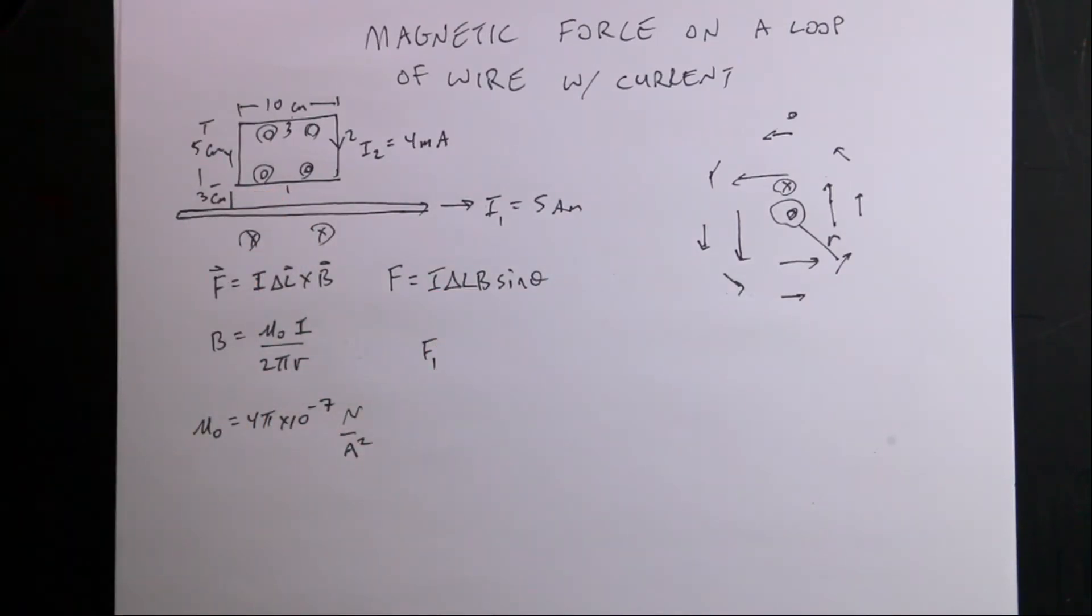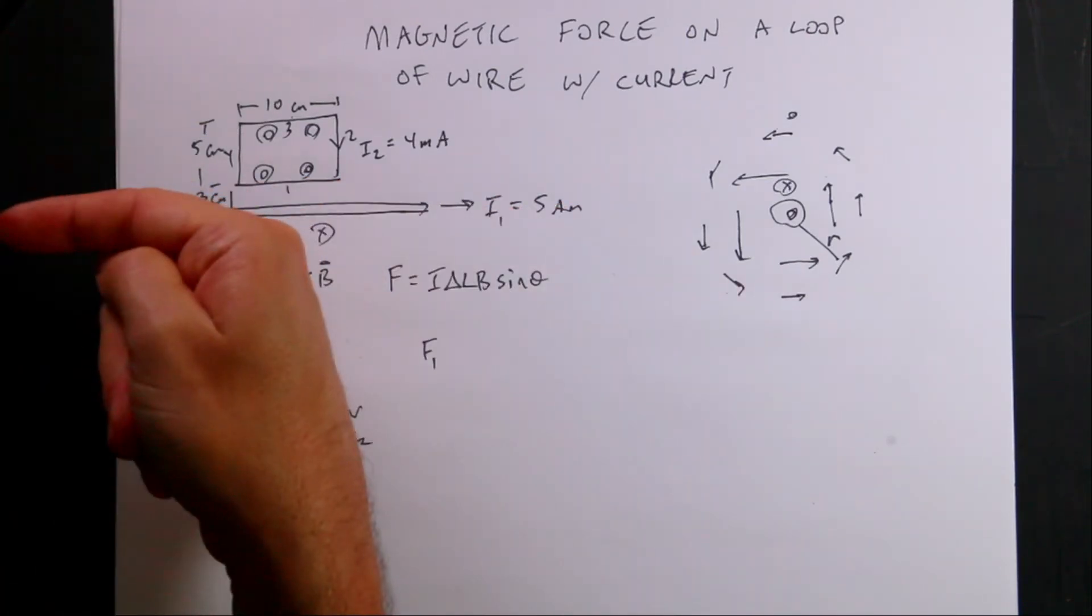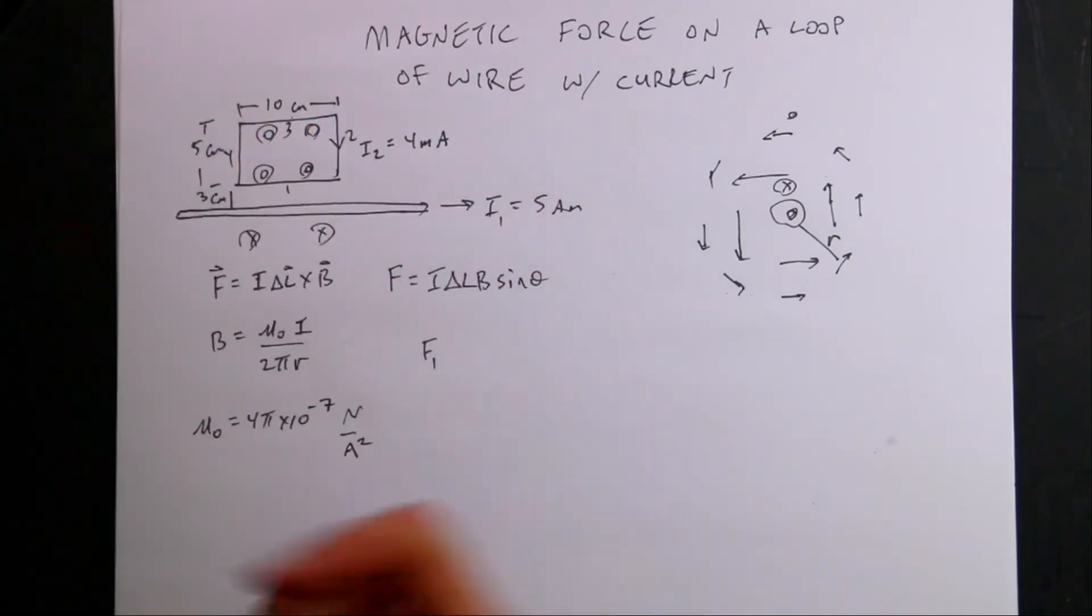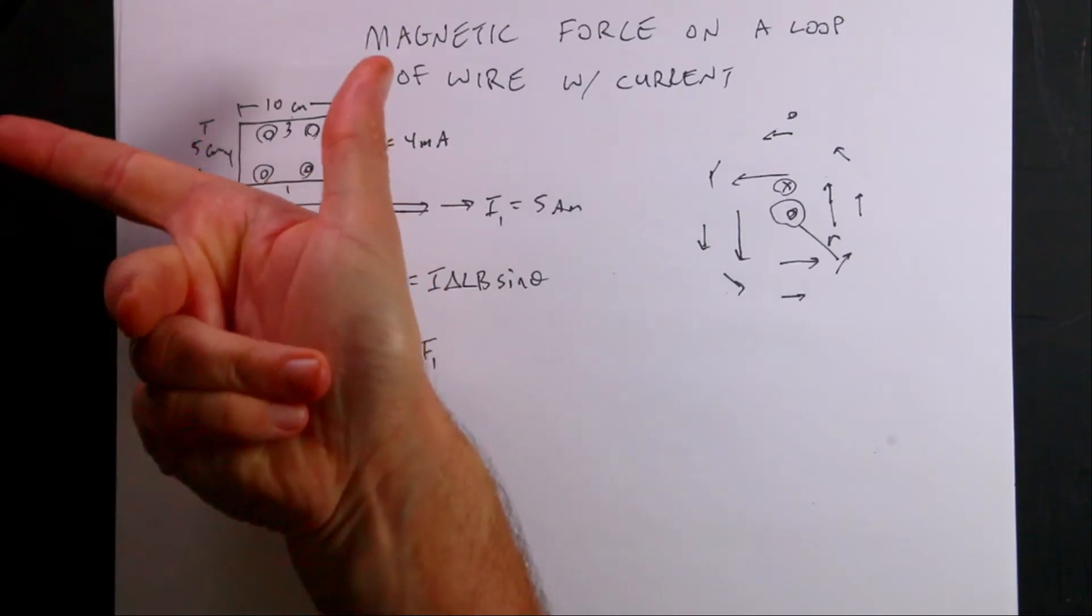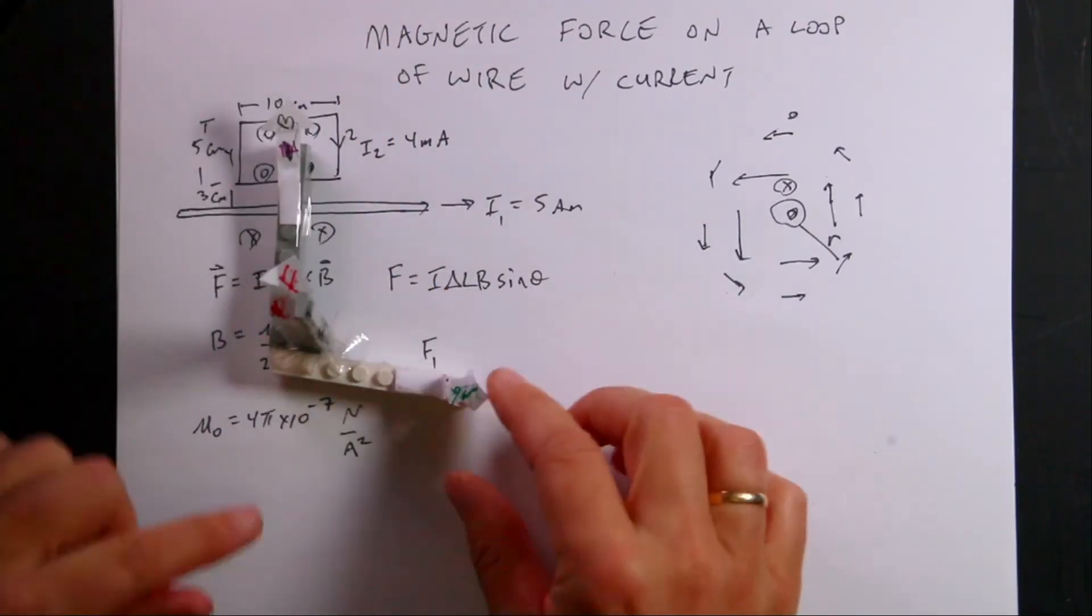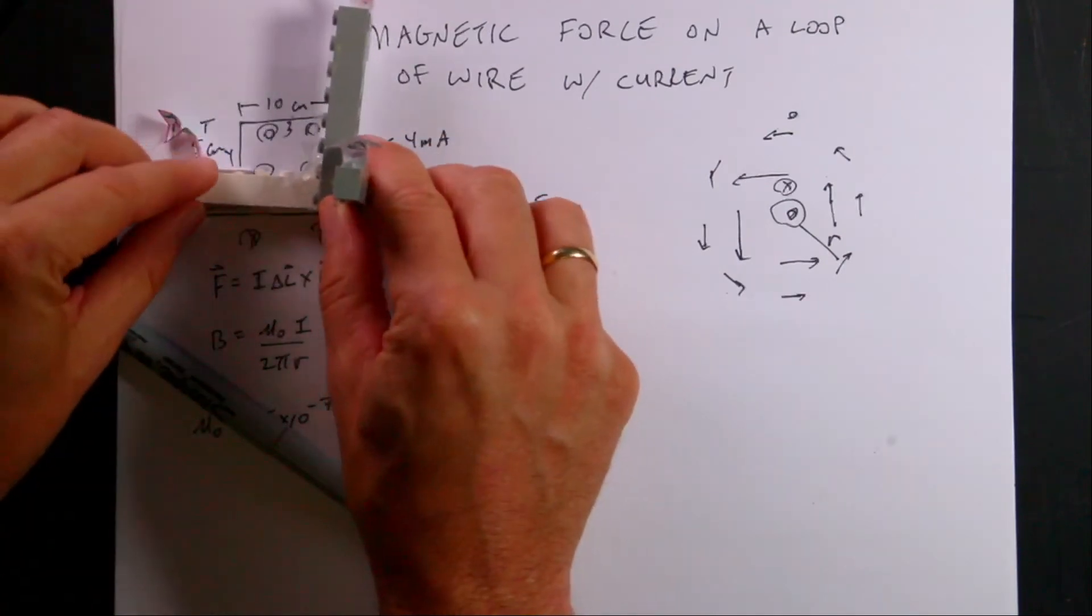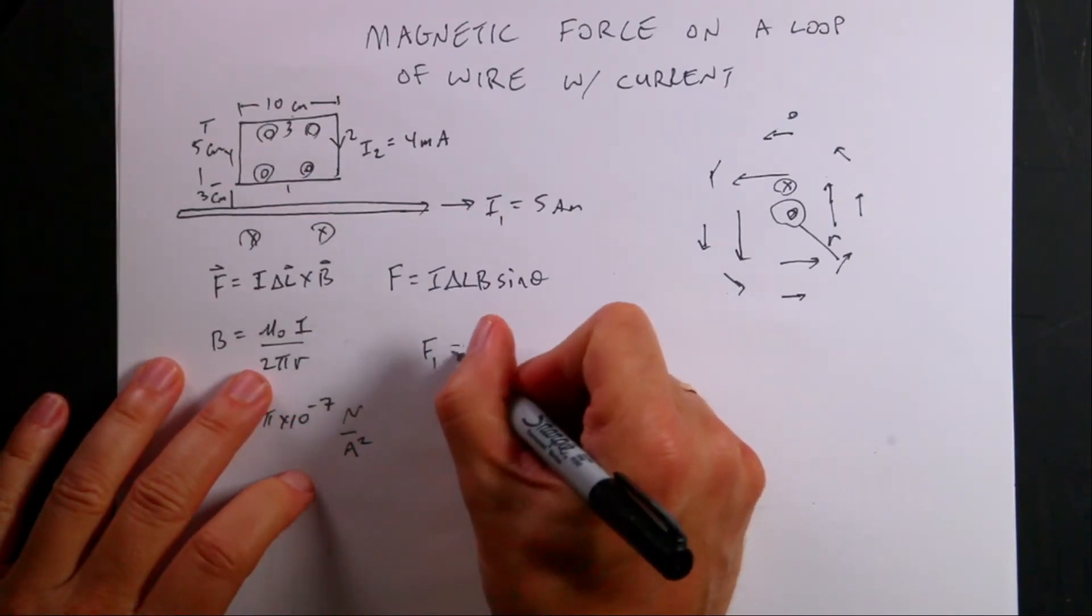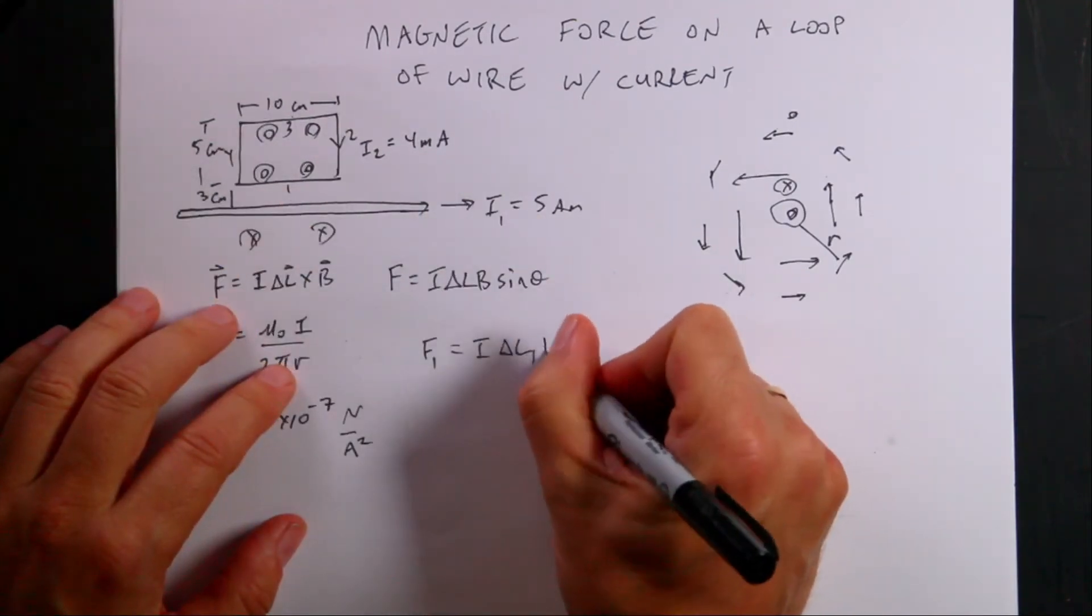First of all, let's find the direction. If in this current is that way and B is that way, then I is that way. B is up, so then the force would be up. So I have F, B, and I. I want B to be out of the page, I want I to be this way, and so my force would be up.